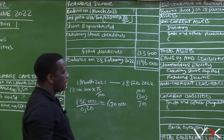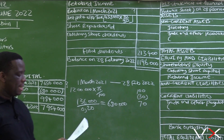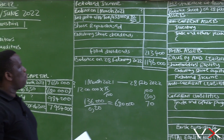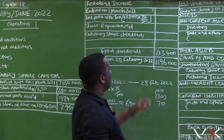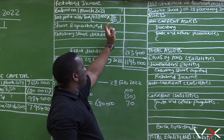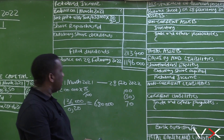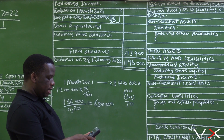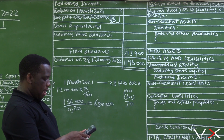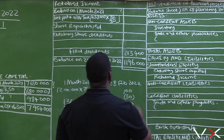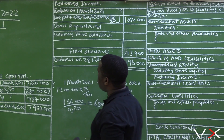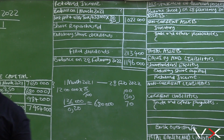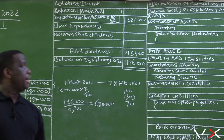The amount given is 438,000 and it's income tax, and we are told that income tax is 30%. We want the net profit after tax, so it is 70, and you divide by the percentage of the amount given, which is 30. Therefore it's 438,000 multiplied by 70 divided by 30, giving us a net profit after tax of 1,022,000.